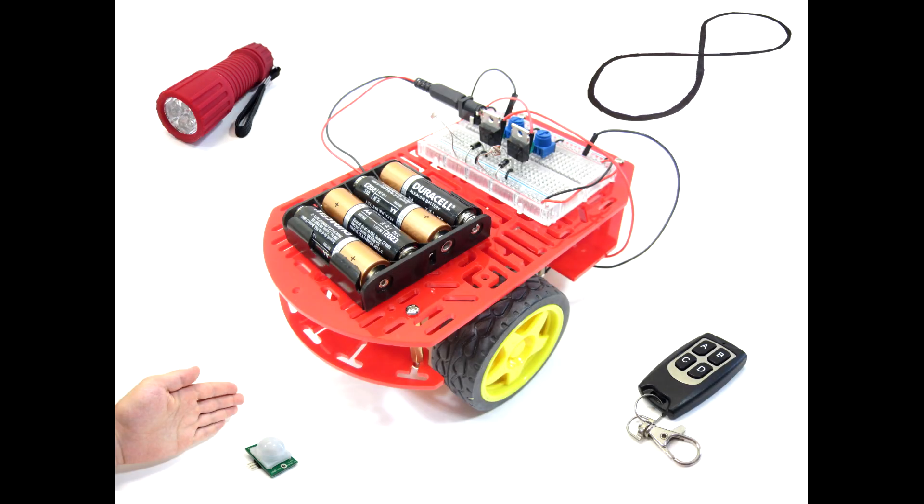You can also build three other variations of the robot using many of the same parts, including a light-following version, a line-tracking version, and a remote-controlled version. You can find links to directions for all of these projects in the description below the video as well.